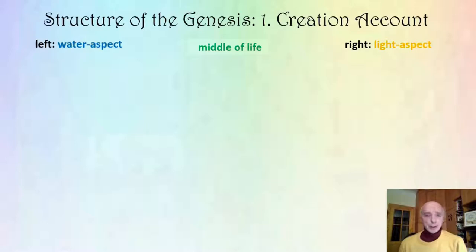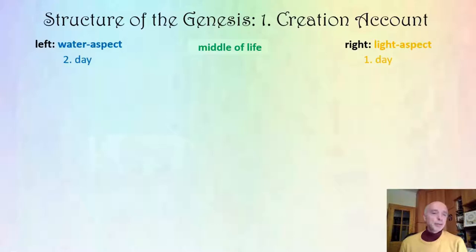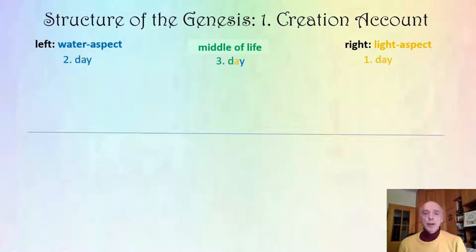The two creation accounts show the same elements arranged in three columns: the right, the left, and the middle column. The right column for the first creation account represents the light aspect — here you find the first day with one creation act. On the left side, representing the water aspect, is the second day with one creation act. In the middle you have two creation acts, working with the results of the left and the right, and something new is created. This is the core principle of the creation found within the first three days, or four creation acts.